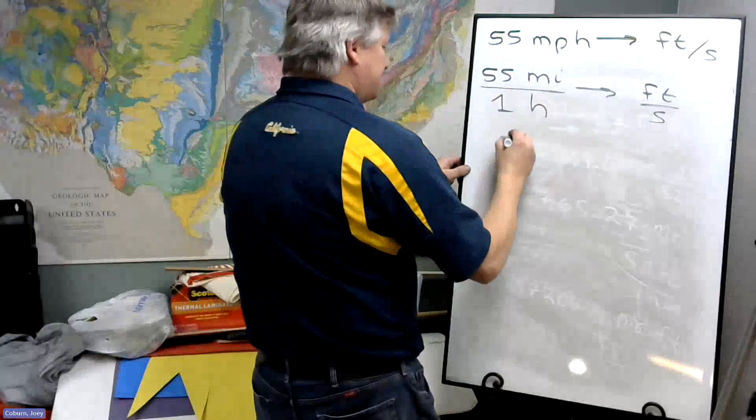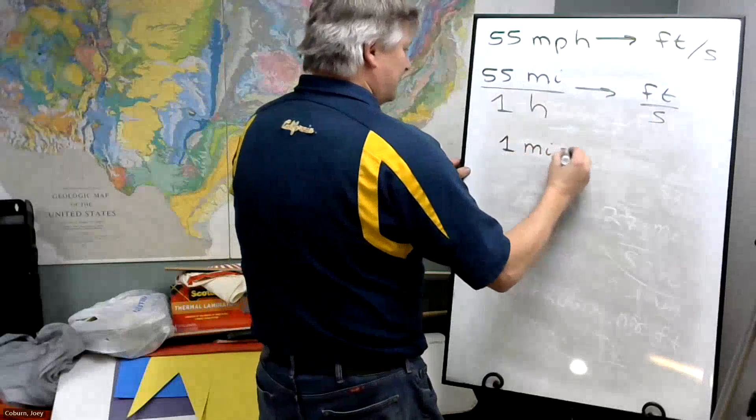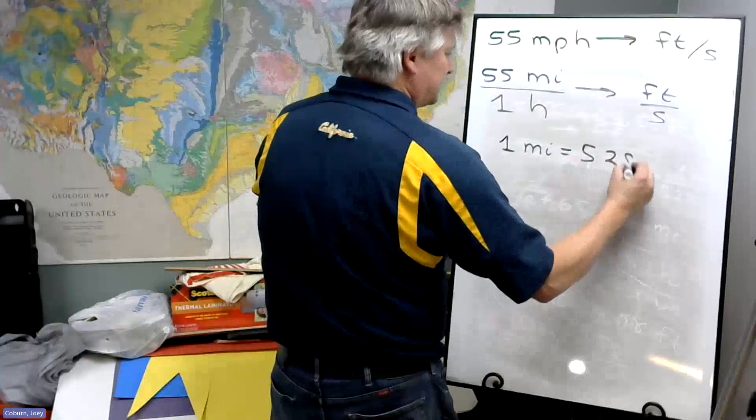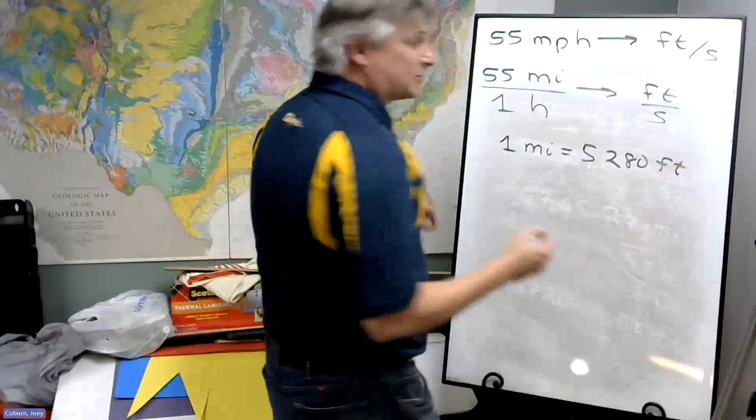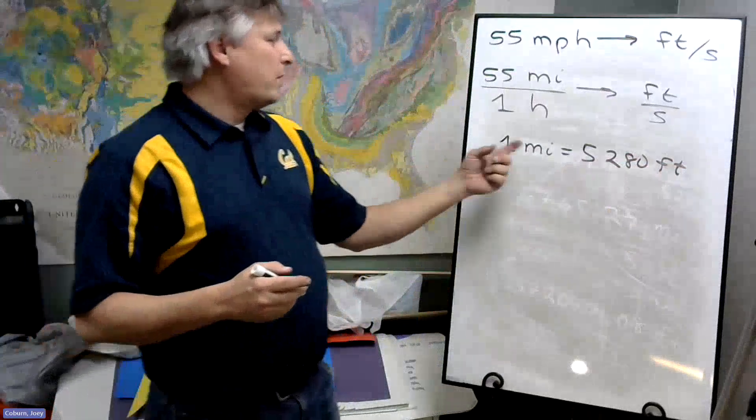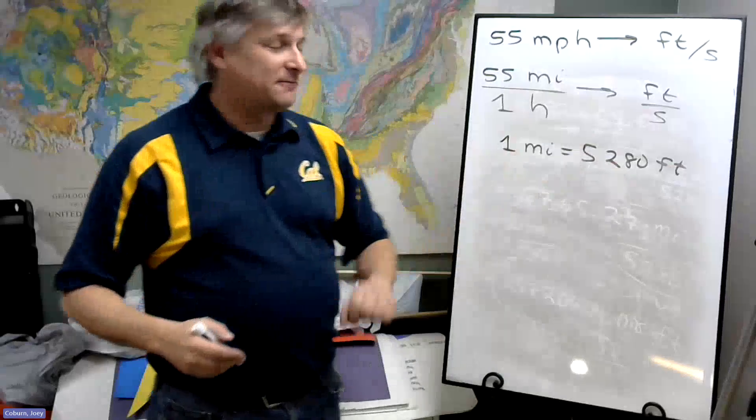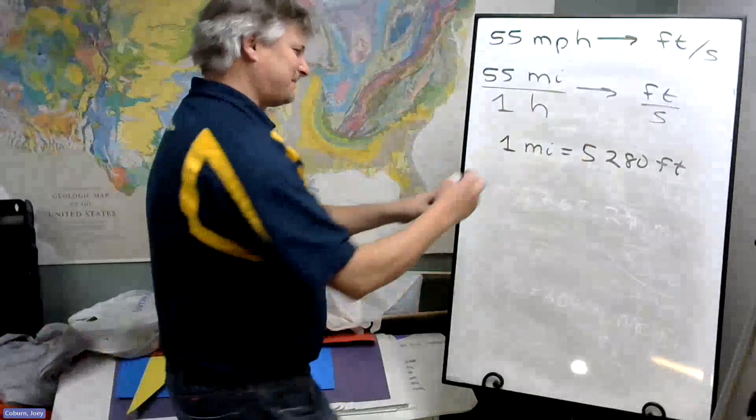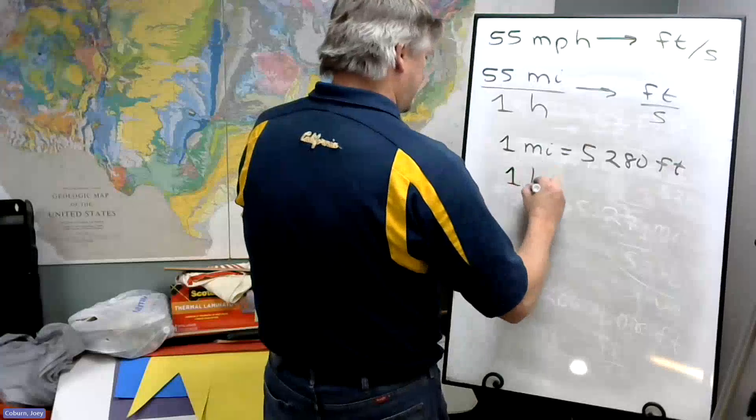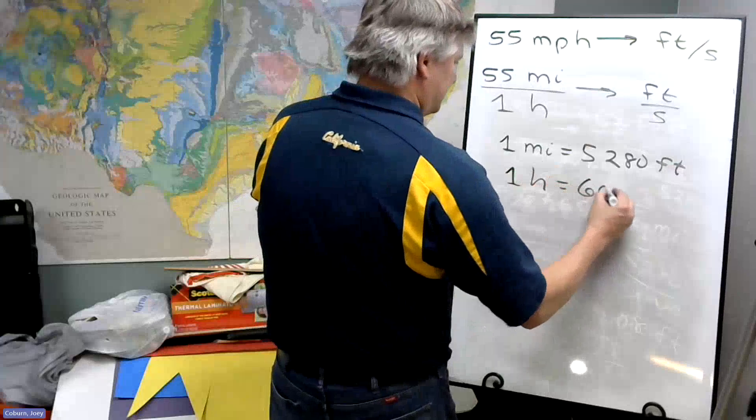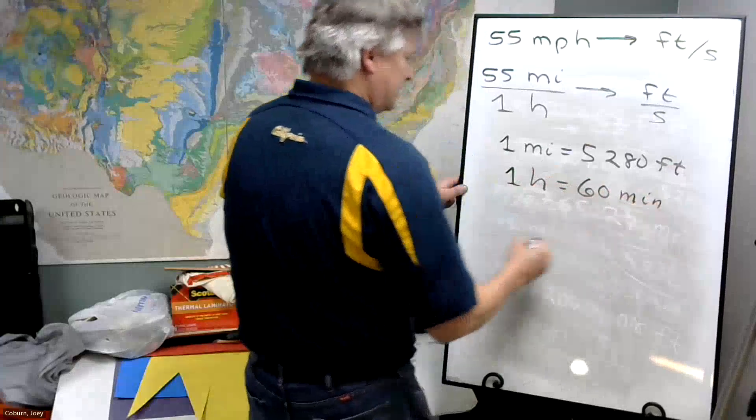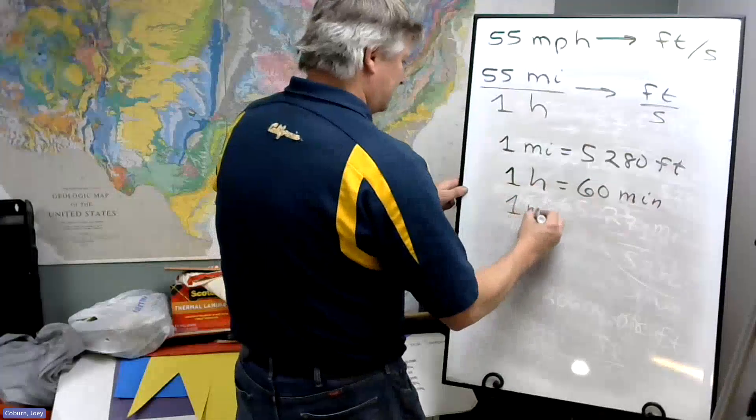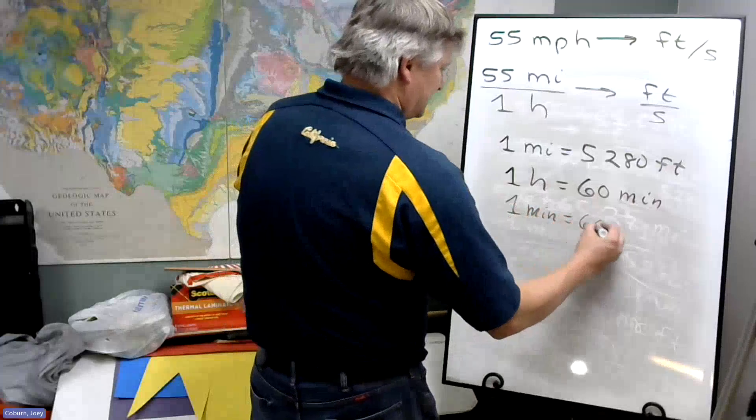So first off for miles, I have this relationship with feet. There's a direct relationship: one mile is 5,280 feet. Now hours and seconds are a little tricky. One hour is 60 minutes, and then one minute is 60 seconds.